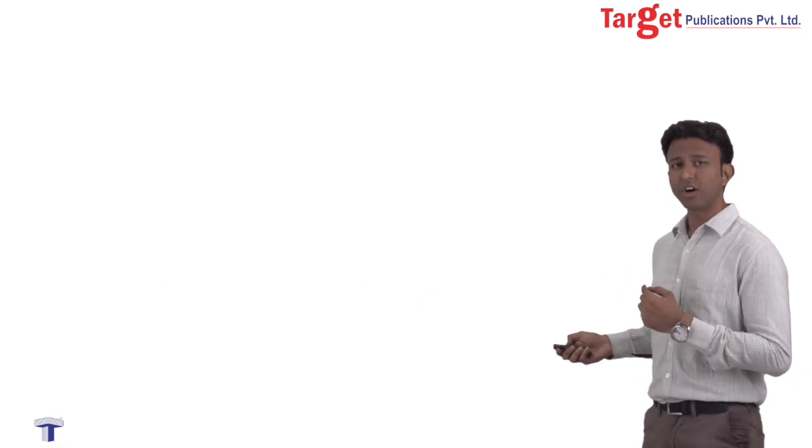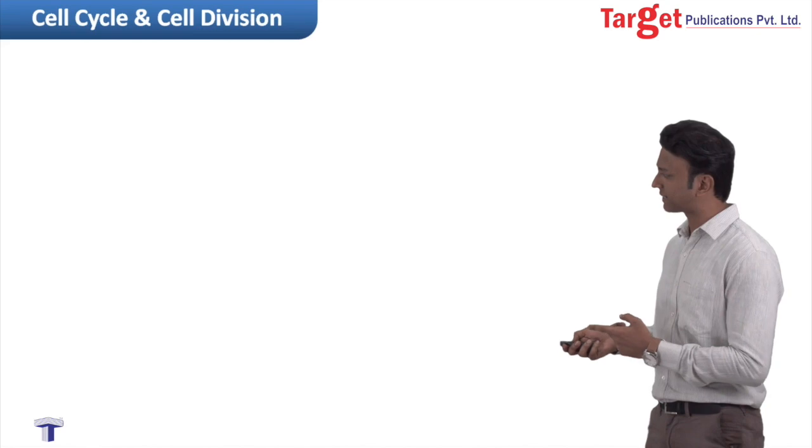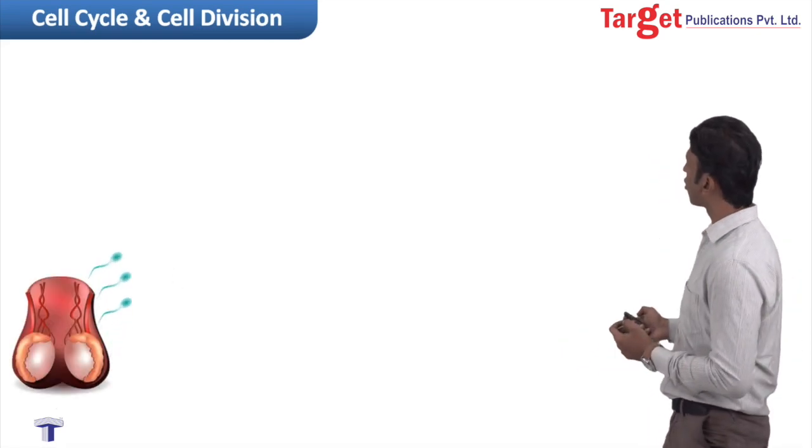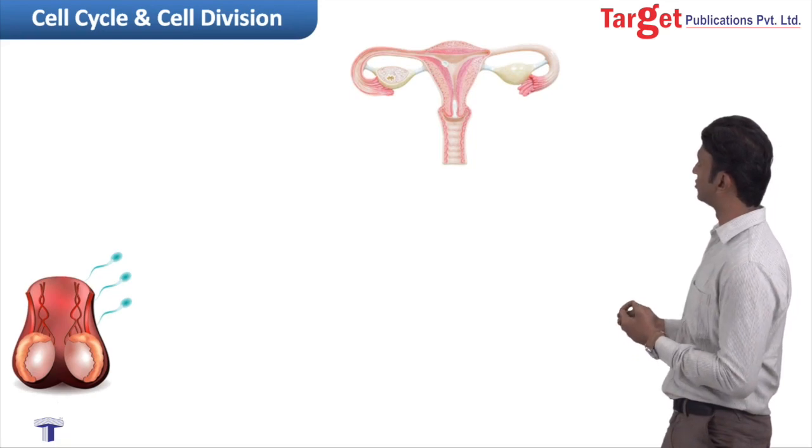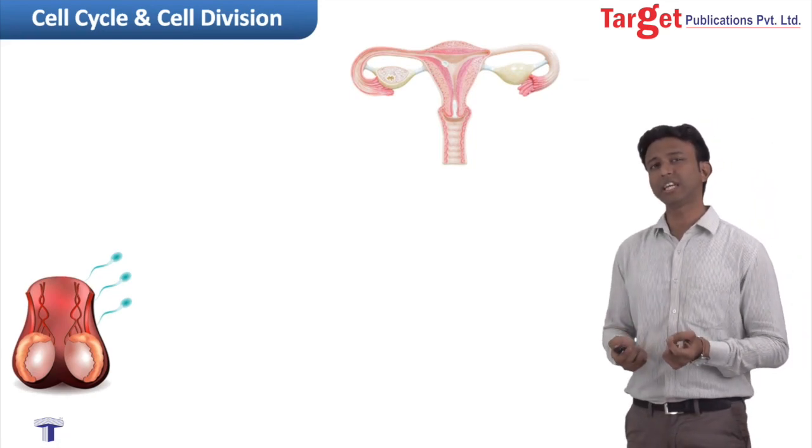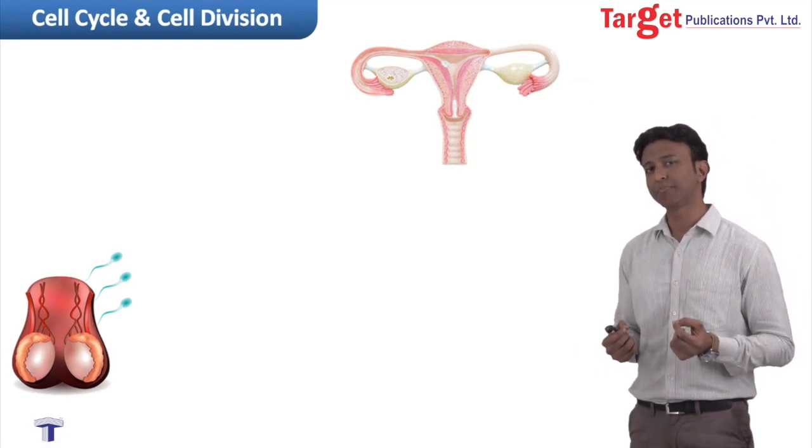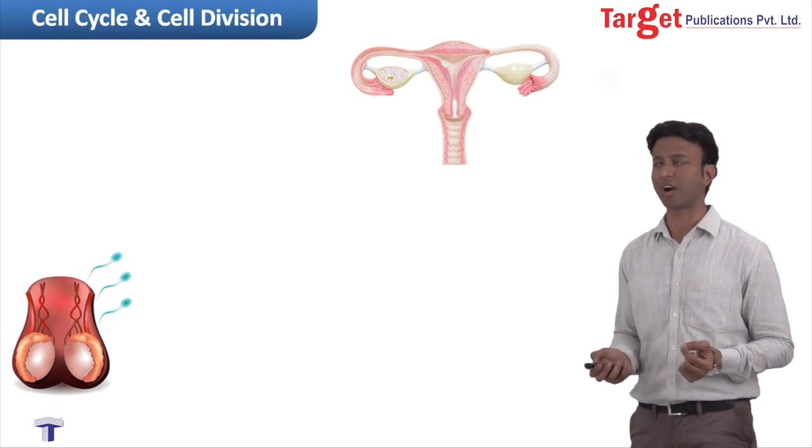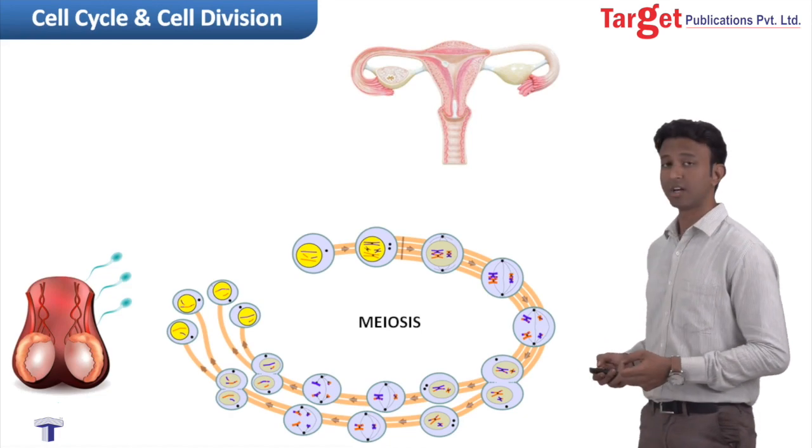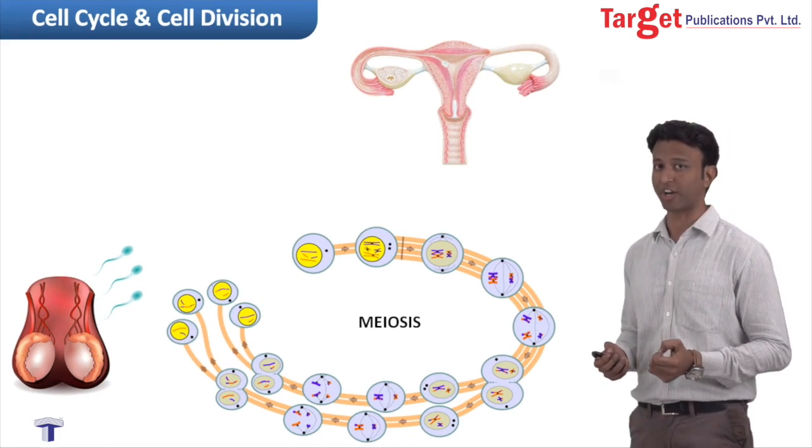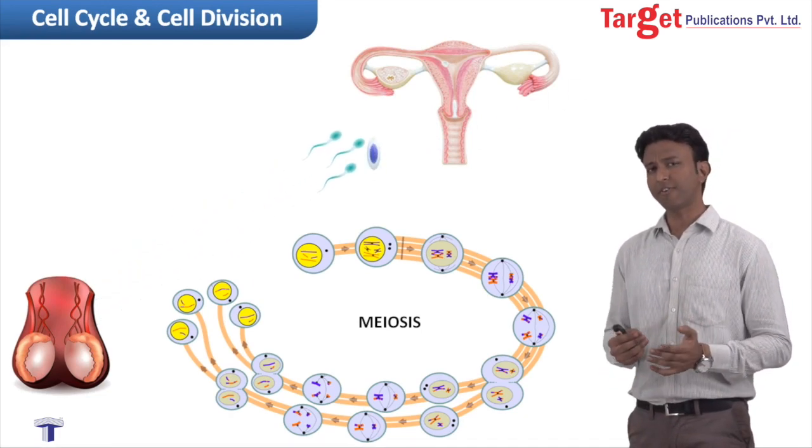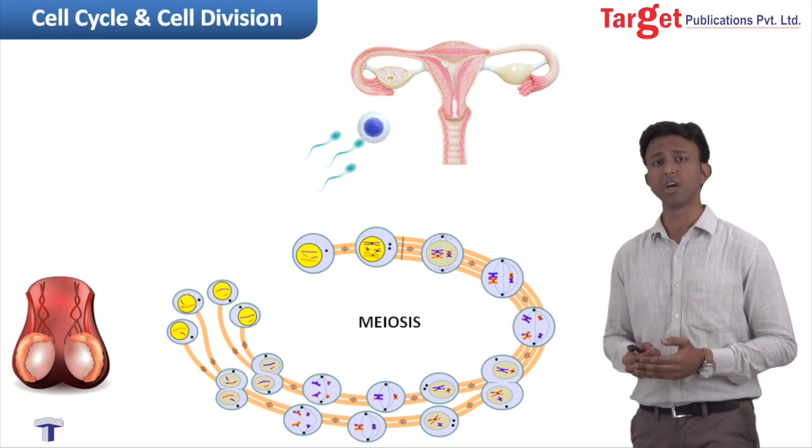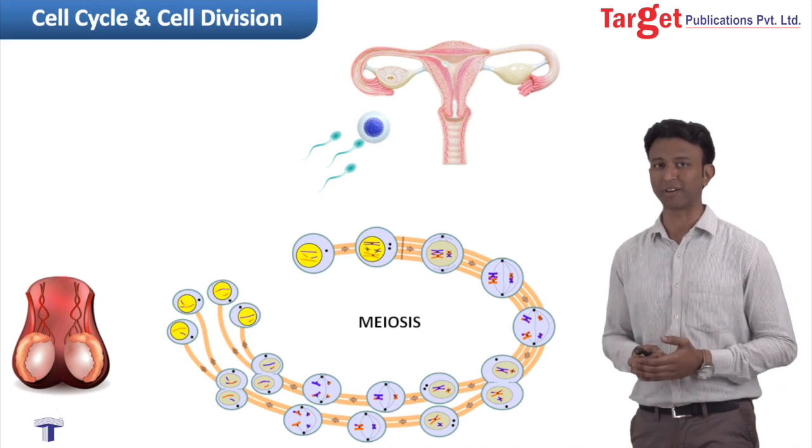If you look at the primary reproductive organs like the testes in males that produce sperms, and the ovaries in females that produce eggs, we get to see that these organs produce these cells by yet another cell division process called as meiosis. Now, this process is important for reproduction. Certainly, we will be learning in greater detail about all these processes of mitosis and meiosis in all the future videos on this topic.